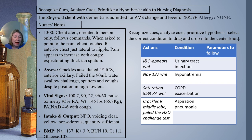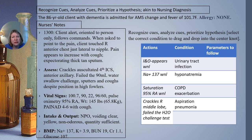A basic metabolic panel shows sodium 137, potassium 3.9, blood urea nitrogen 19, creatinine 1.1, and glucose 107. Now we need to recognize cues and analyze them so we can prioritize our hypothesis and select the correct condition to drag and drop into the center of the bowtie.